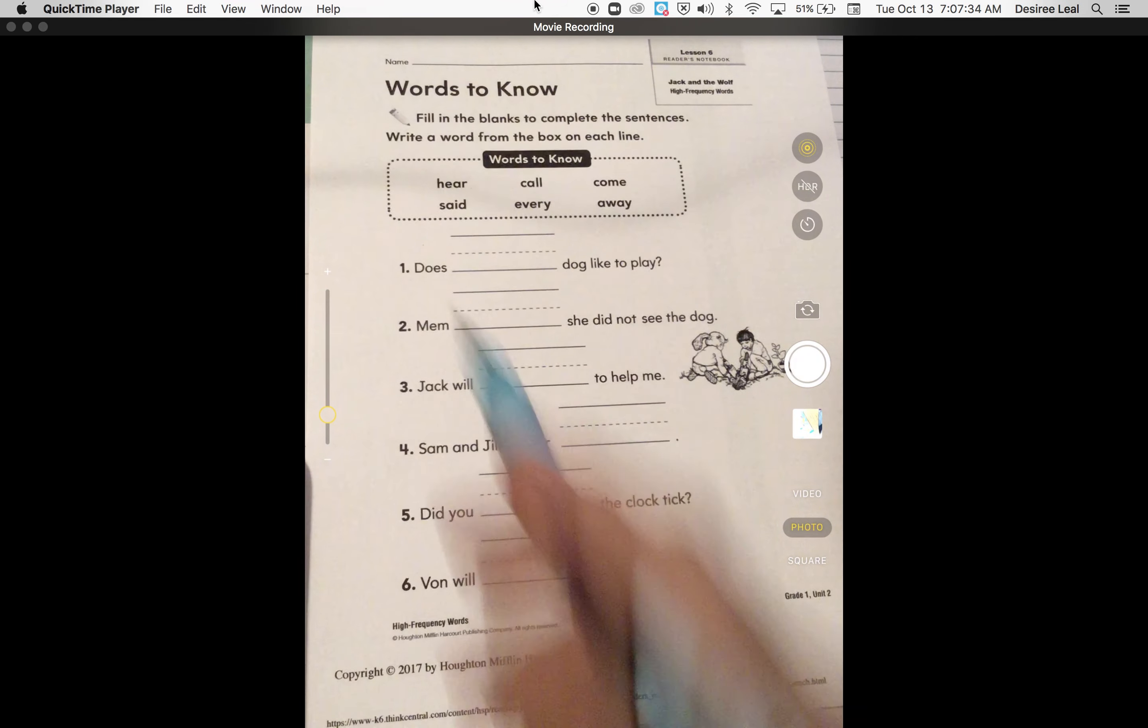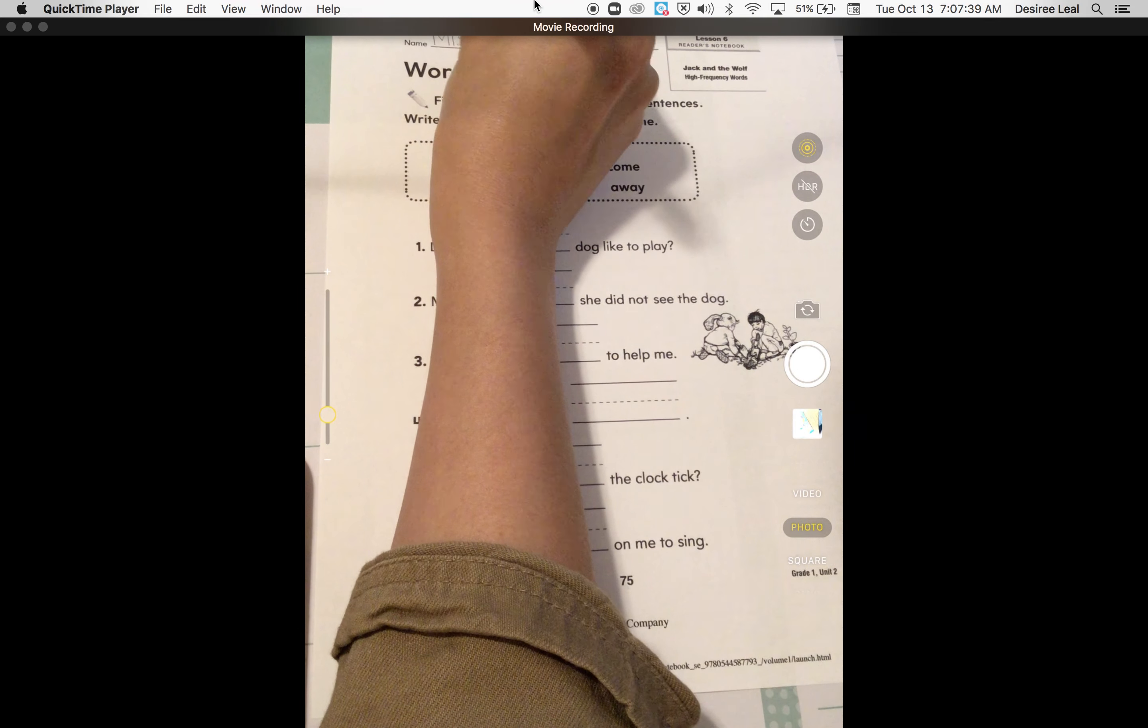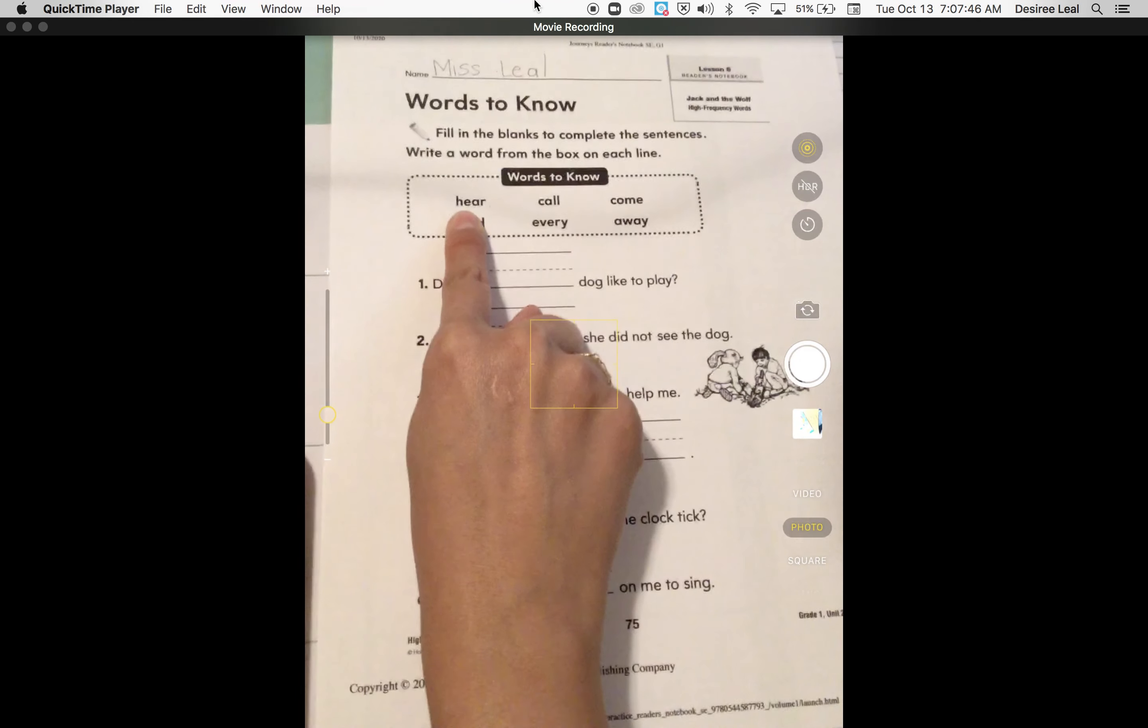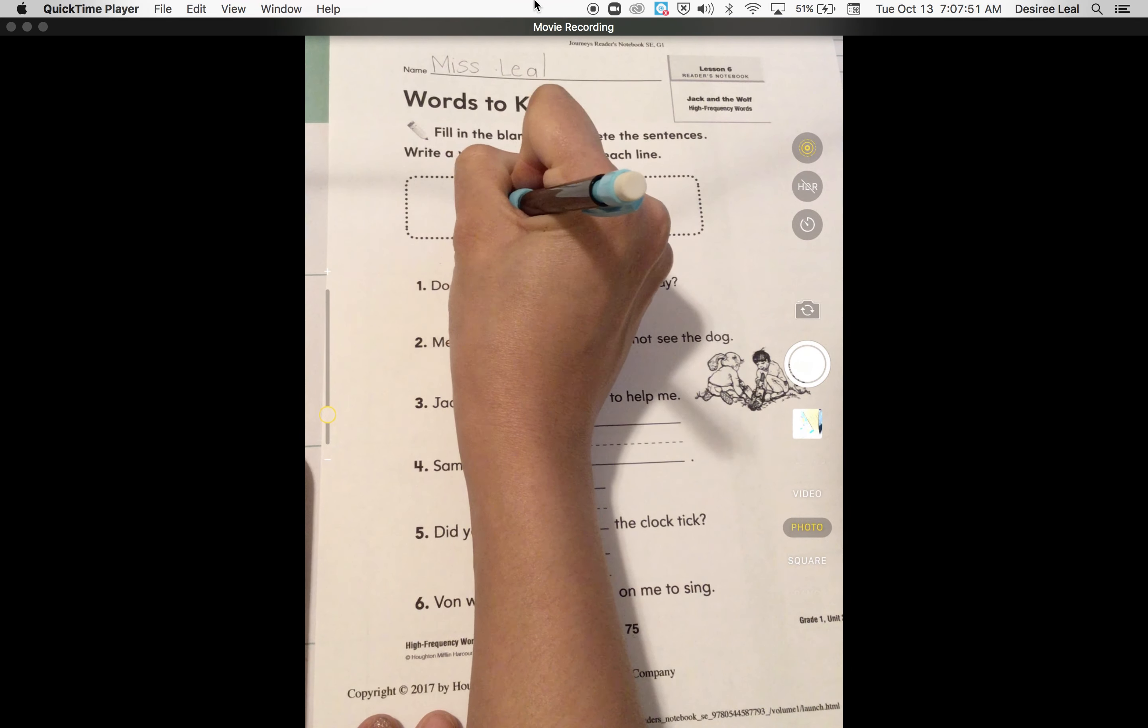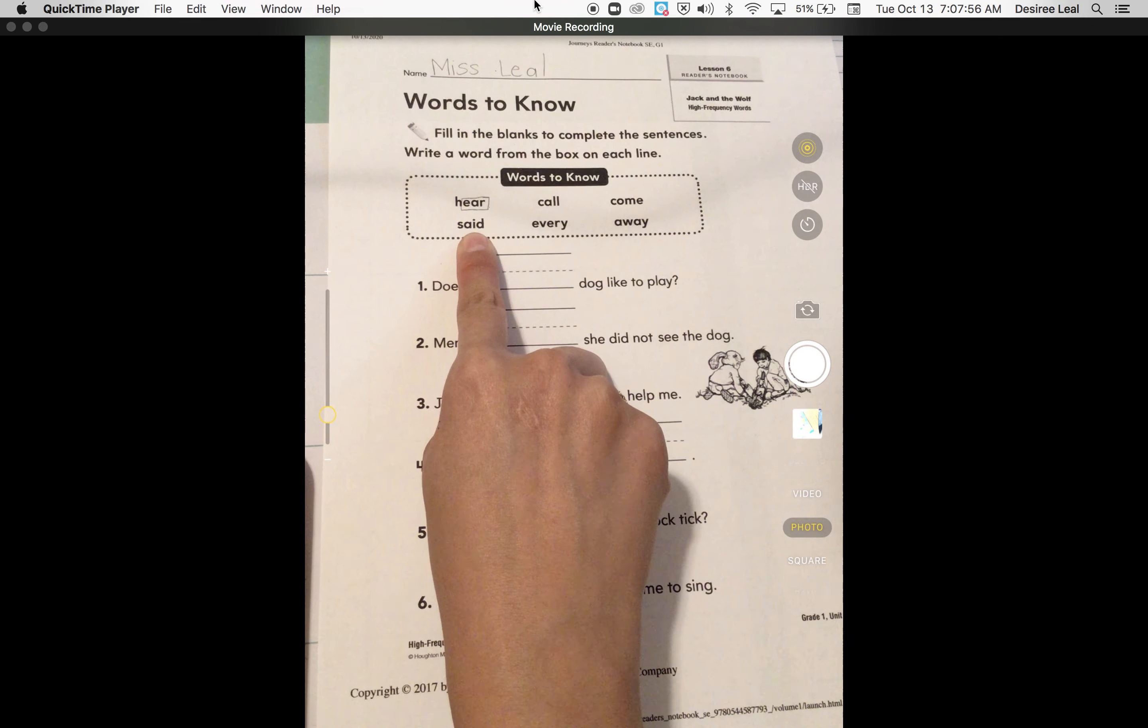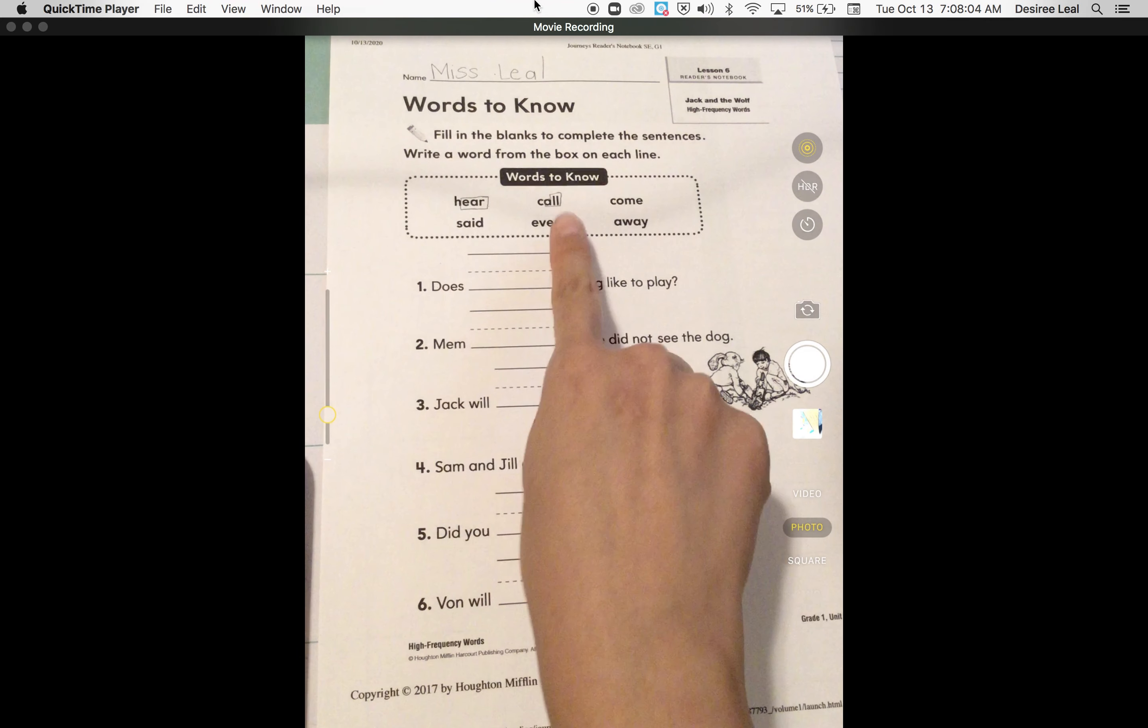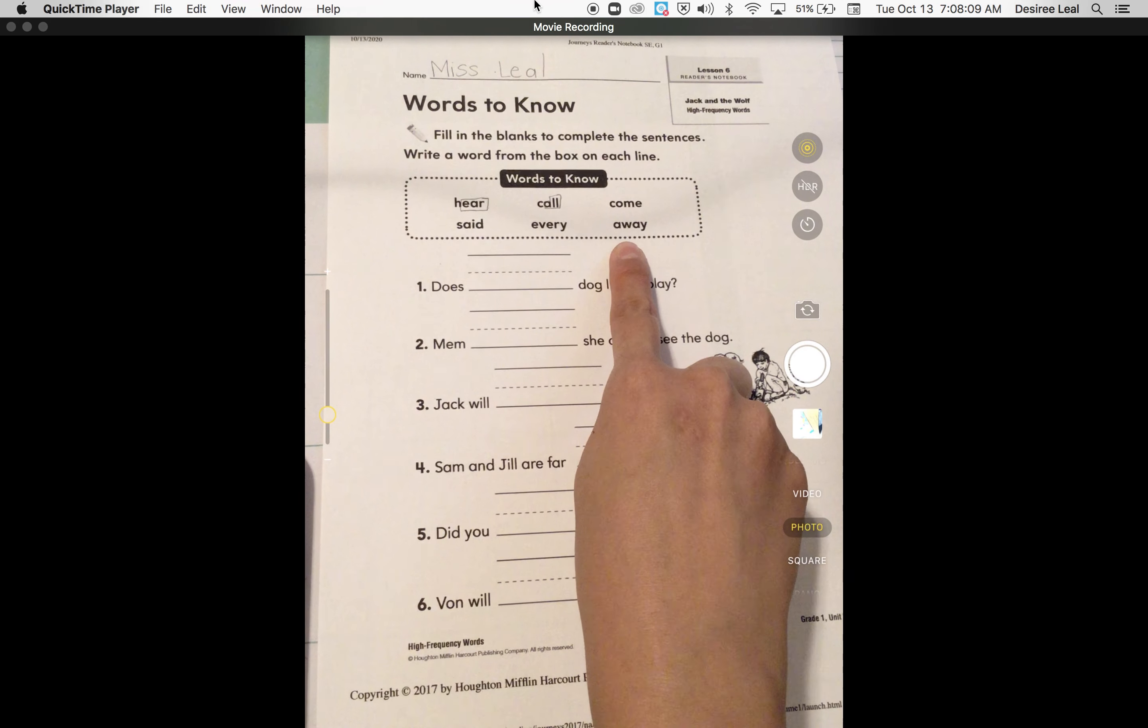Seventy-five, okay? We're going to put our name at the tippy-top. And let's go ahead and review our Words to Know. So point with me, say hear, and I want you to box that little word ear so you remember that this word is hear. Next word is said, call, and it has another small word all in it, so call all. Every, come, and away.